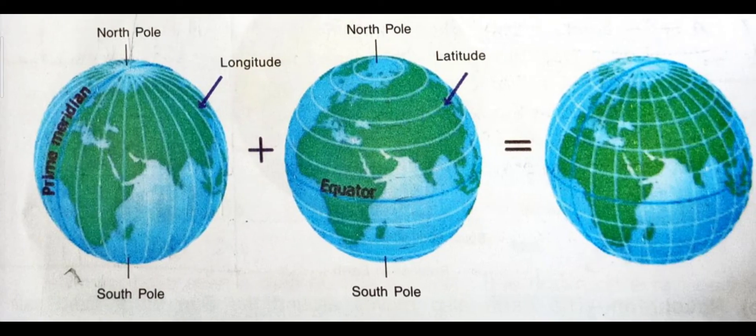Look at the picture of the globe. The northernmost point on the globe is called the North Pole, and the southernmost point is called the South Pole.